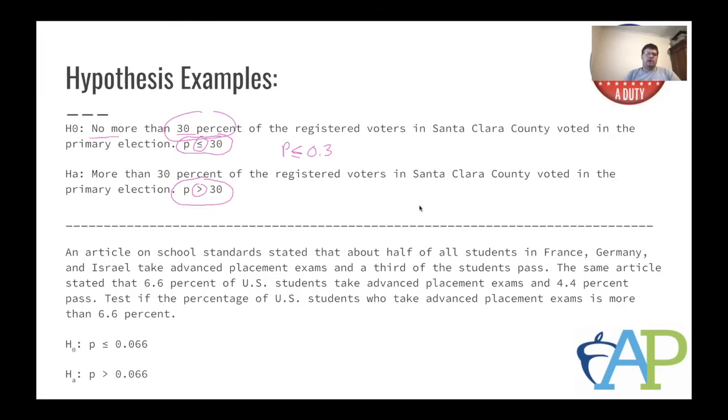The one below it is about school standards in Germany, France, and Israel about how many students take the AP exam and pass. 6.6 percent of U.S. students take the advanced placement exam and 4.4 percent pass. Is that more or less in other countries? The alternative is less than or equal to 0.066 and then the alternate would be greater than 0.066.